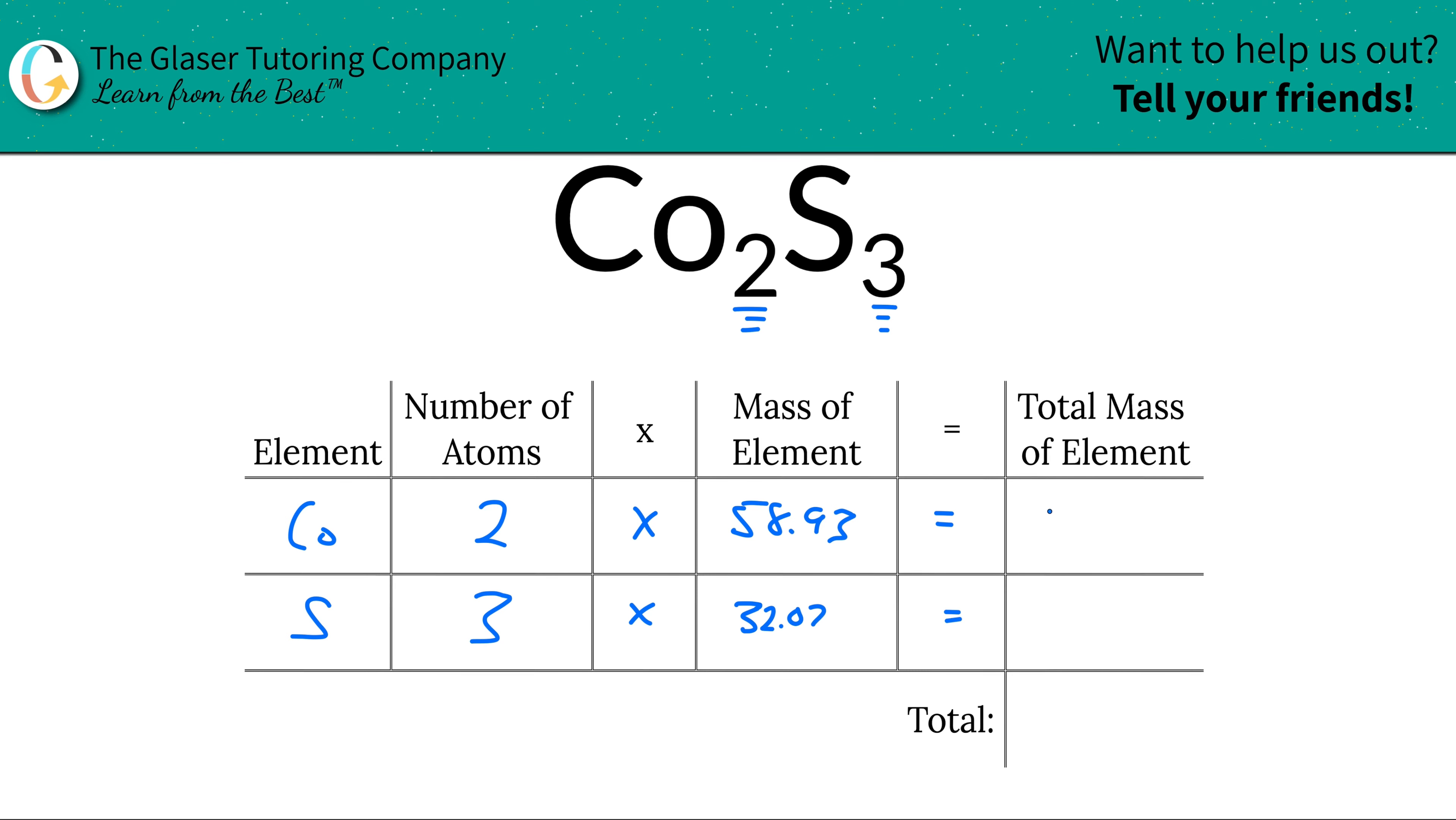And when we do that multiplication, the total mass of cobalt is about 117.86 units of mass.